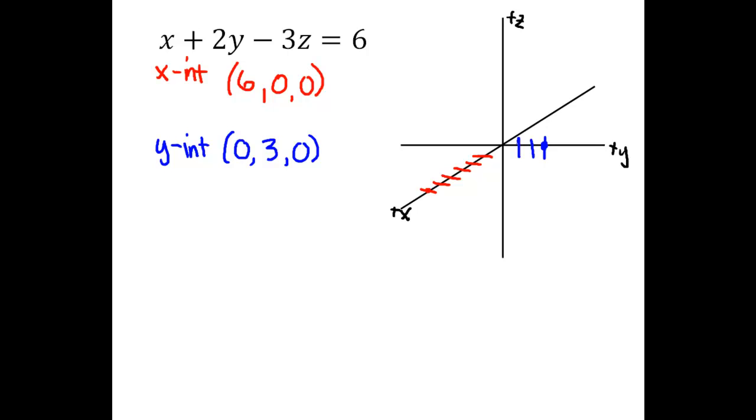And then the z-intercept when x and y are 0, we'll have negative 3z equals 6, so z is negative 2.